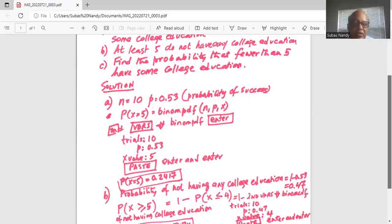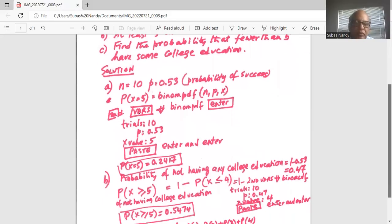So the probability of a person not having college education is one minus 0.53. Because 0.53 is the probability of having college education. So probability of not having any college education is one minus. It's a complement event. So it is one minus 0.53 is 0.47.